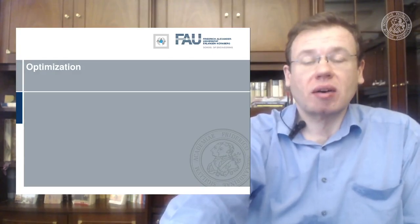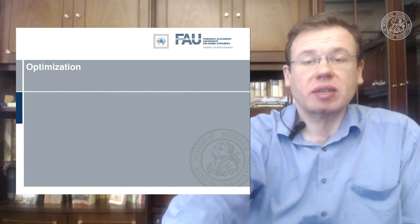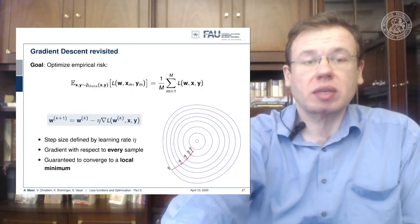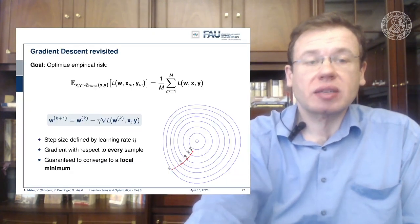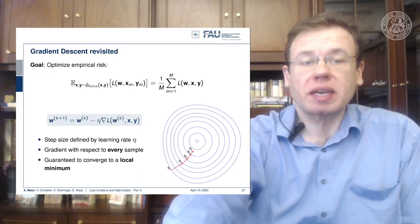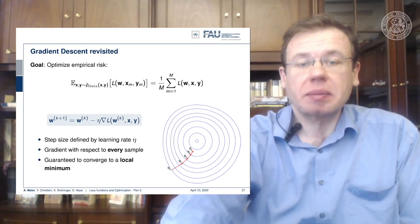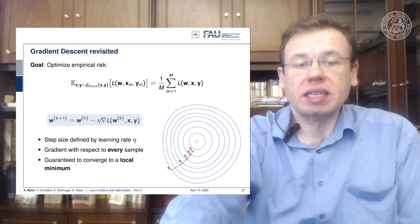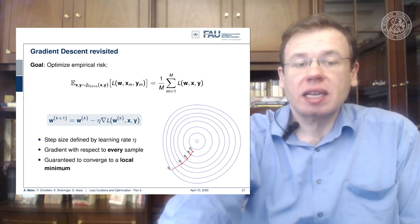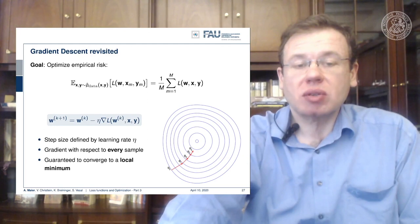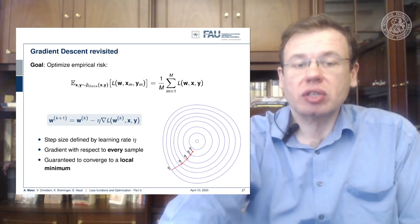Let's have a look at the gradient descent methods in a little bit more detail. We've seen that the gradient is essentially optimizing the empirical risk. Here in this figure you see that we do one step each towards this local minimum and we have this predefined learning rate ETA. The gradient is of course computed with respect to every sample and this is then guaranteed to converge to a local minimum.